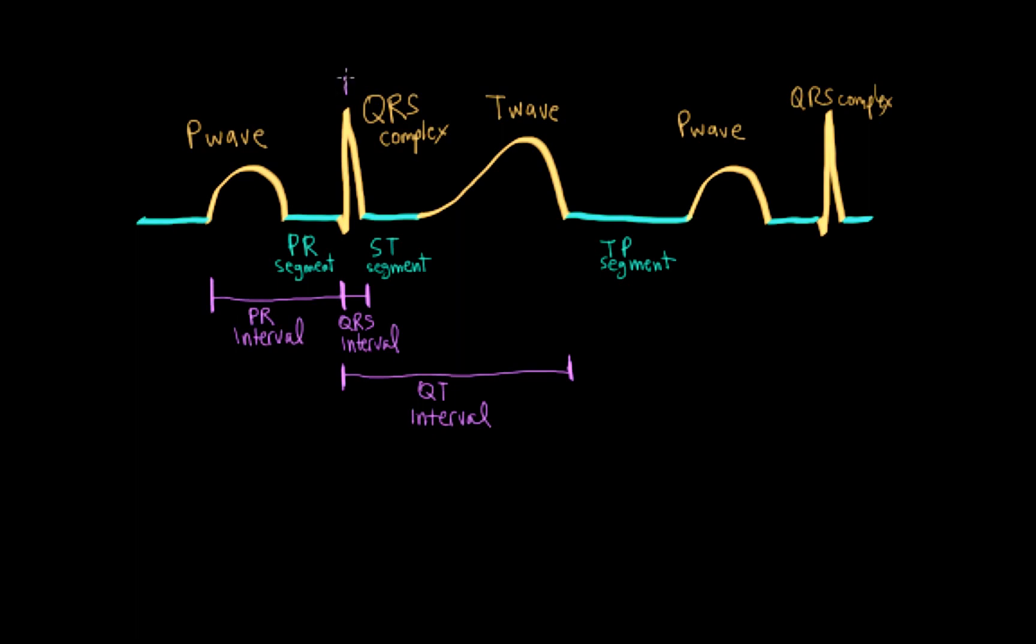Finally, we can look at the peak of one QRS complex to another. It represents the entire cardiac cycle from one spot to another. And this RR interval is very important in determining the heart rate.